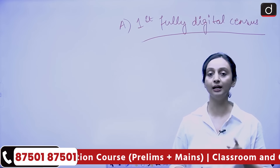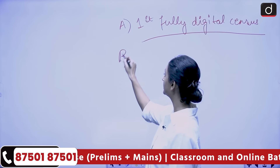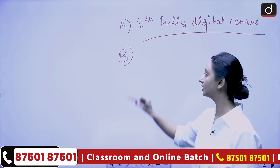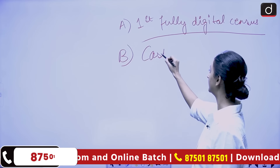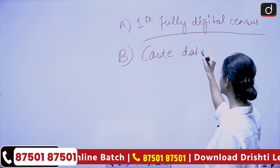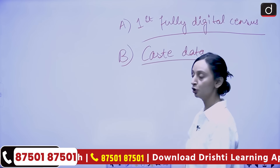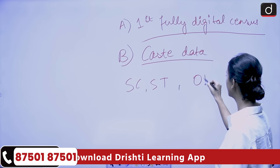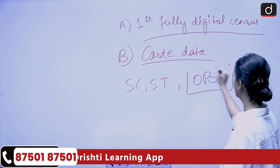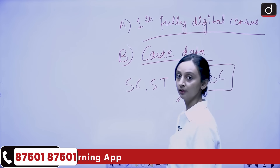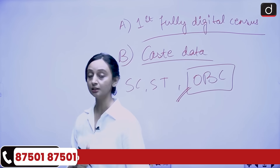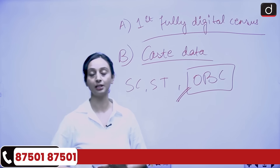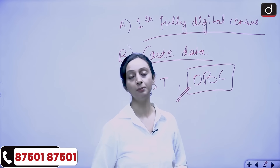The second unique feature is that for the first time since 1931, we are going to include caste and sub-caste data. So not just the data of SCs and STs — we are also going to include the data of OBCs, other backward classes. This makes the census particularly significant: it is going fully digital and, for the first time, adding caste and sub-caste data.